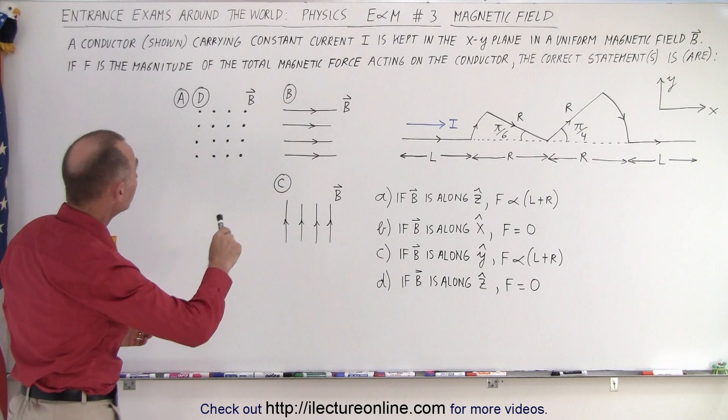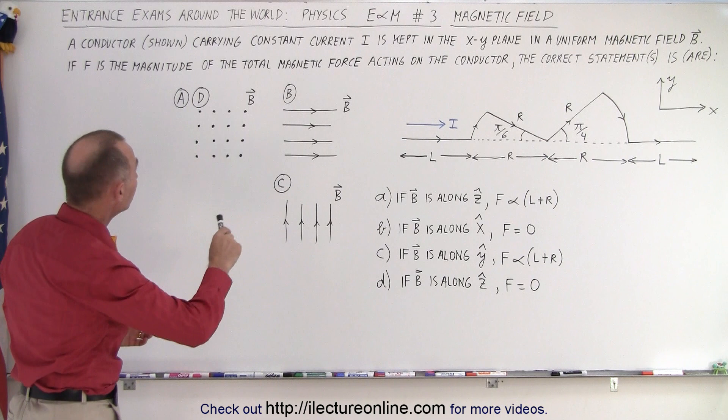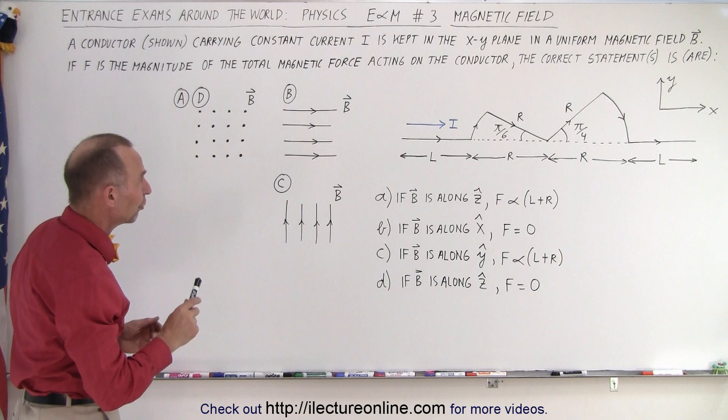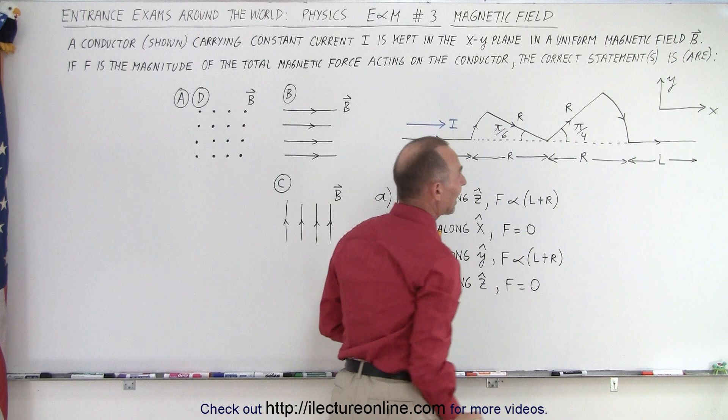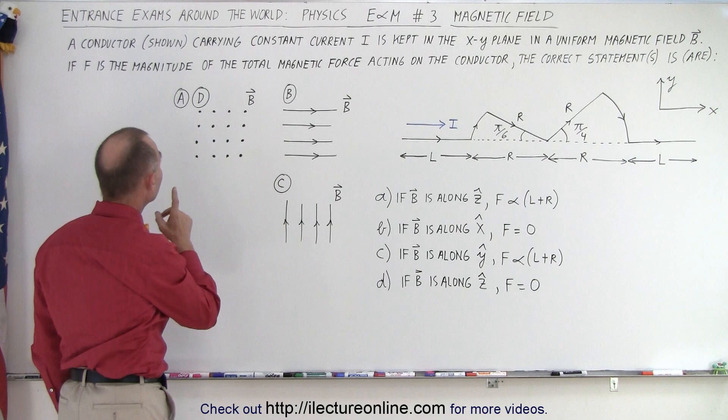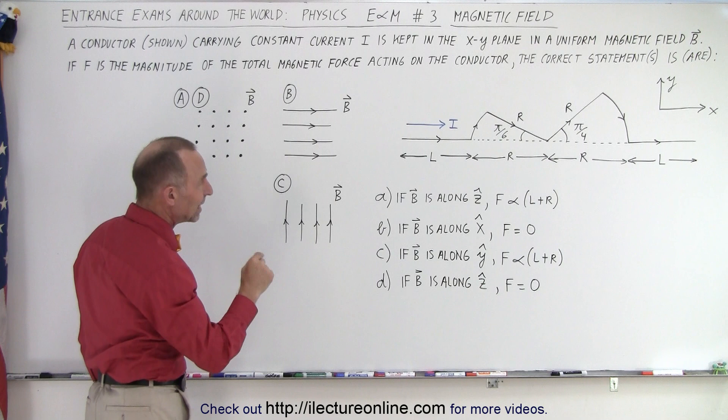Let's read the question first. We have a conductor which is shown carrying a constant current I, kept in the XY plane in a uniform magnetic field B. So here we have a wire which is bent in a particular shape, carrying a constant current I. If F is the magnitude of the total magnetic force acting on the conductor, the correct statement is one of four options — you have to figure out which of those four are correct.